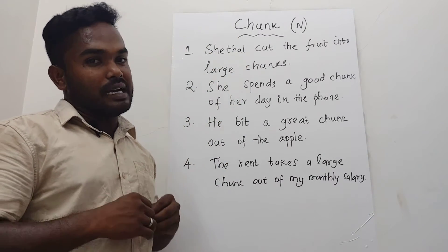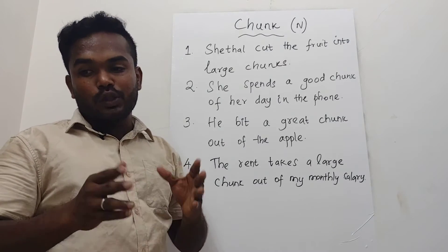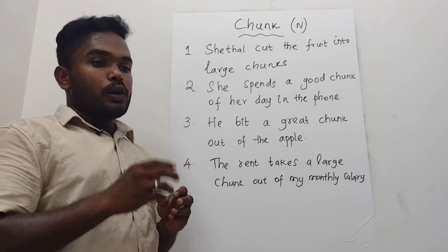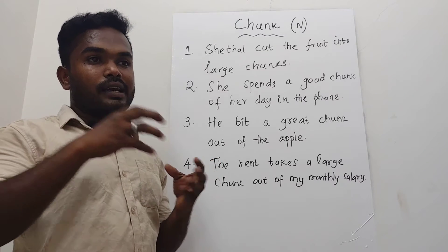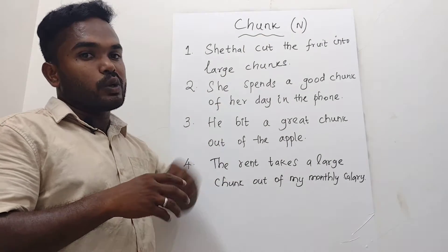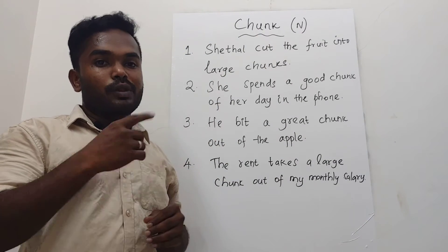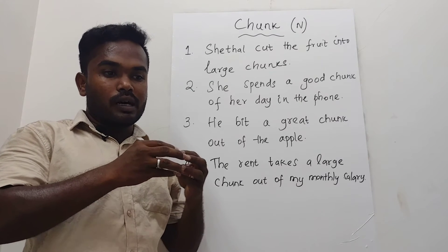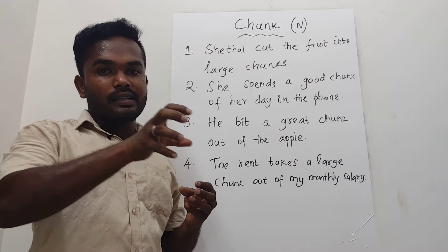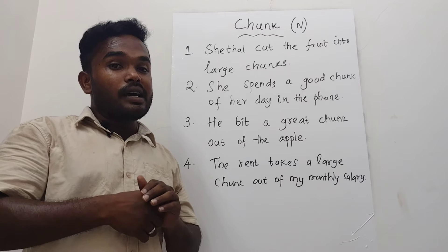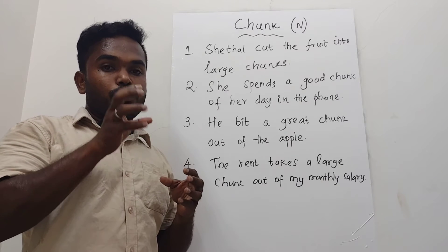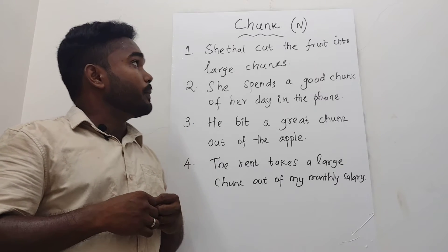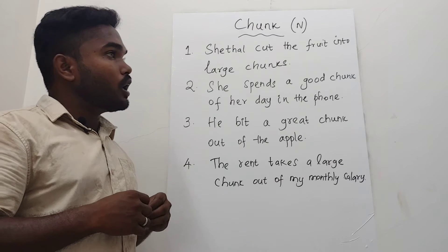Now I'll give you the translation. Chunk means a very large piece. In certain cases it can also refer to taking a large portion out of something. Similarly, a chunk of time means a very large amount of time spent, and a chunk of money means a large amount taken from a total — like a salary.